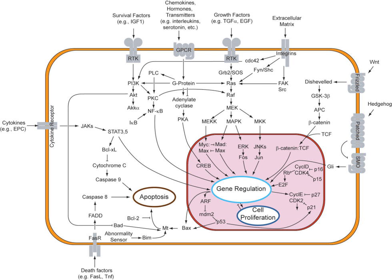Cell signaling has been most extensively studied in the context of human diseases and signaling between cells of a single organism. However, cell signaling may also occur between the cells of two different organisms. In many mammals, early embryo cells exchange signals with cells of the uterus. In the human gastrointestinal tract, bacteria exchange signals with each other and with human epithelial and immune system cells.